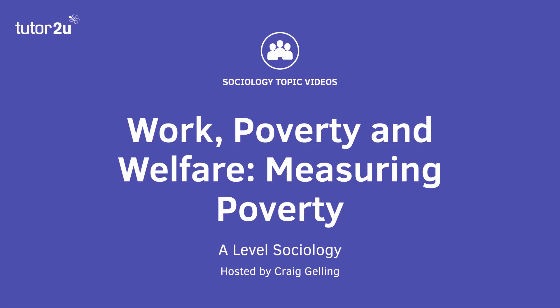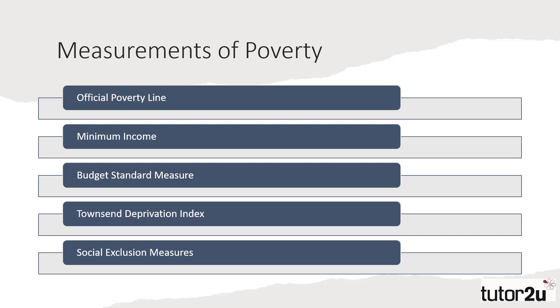Welcome to this Tutor2U sociology topic video looking at work, poverty and welfare, focusing on measures of poverty. There are several different measures of poverty that return very different results and provide a variable picture of poverty in the UK. In this video we're going to examine five different types of measures listed on the screen, and these are based upon differing definitions of poverty, which we examined in our previous video in this series.